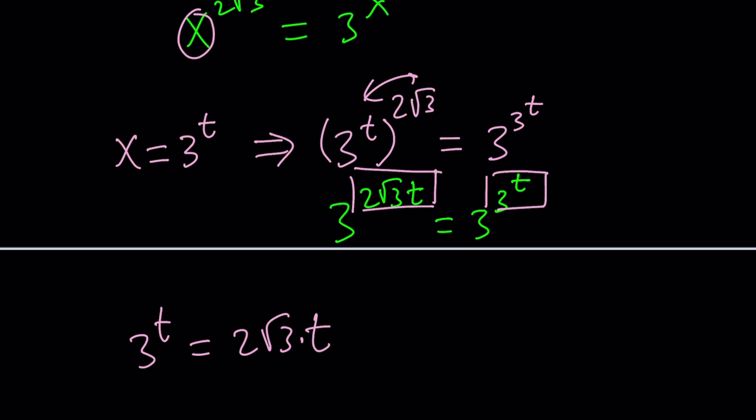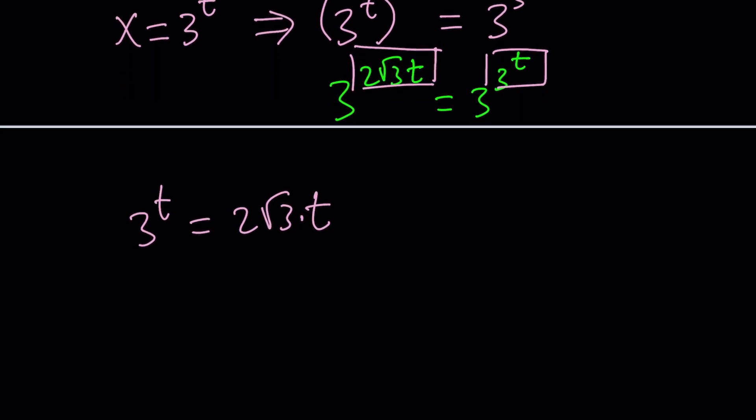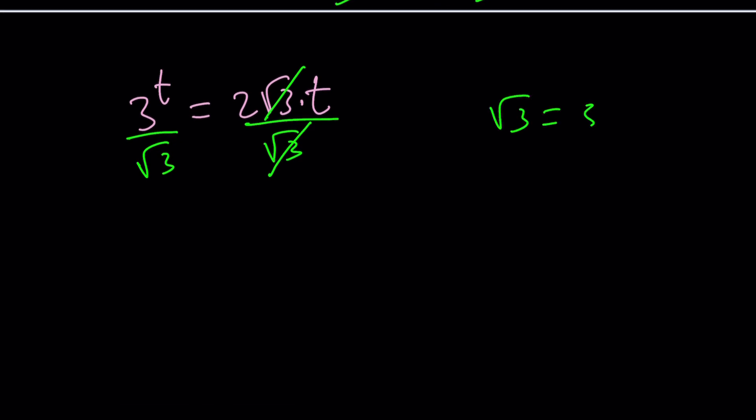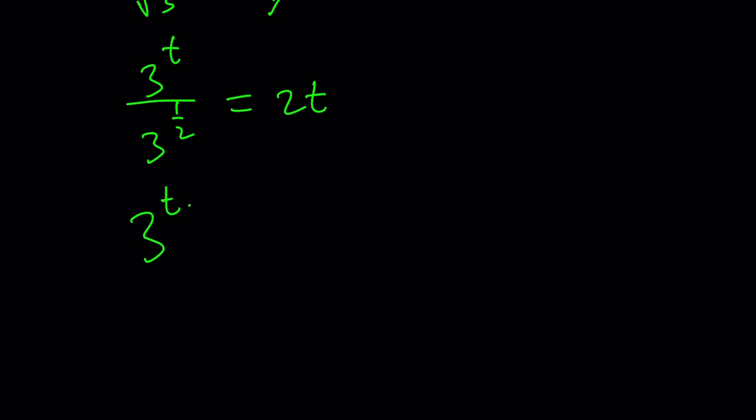We now have 3^t = 2√3·t. And one of the things that's really nice about it is that √3 is a power of 3, which is 3^(1/2). Let's divide both sides by √3 to get rid of the irrationality on the right-hand side and put it on the left-hand side. Now √3 can be written as 3^(1/2). So I have 3^t divided by 3^(1/2) equals 2t. We can subtract the exponents, 3^(t-1/2) = 2t.